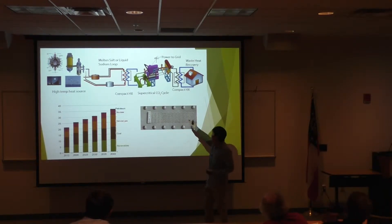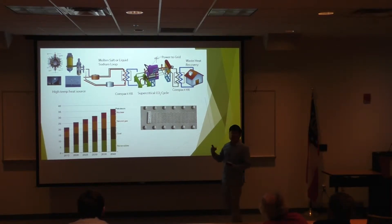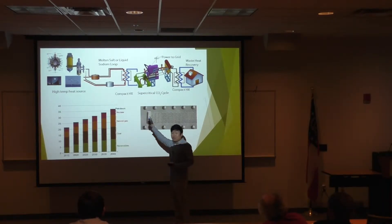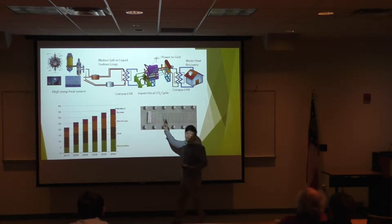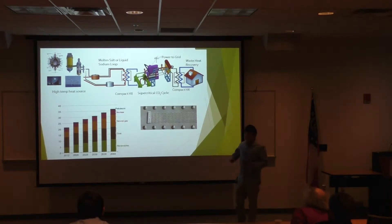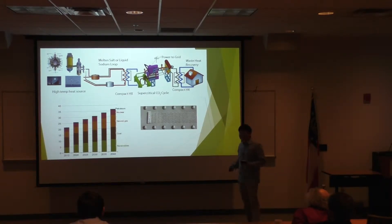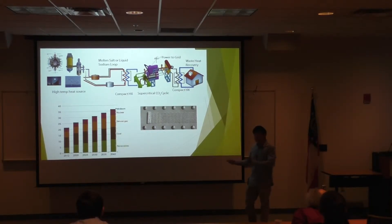We focus on the supercritical CO2 cycle. We heat the CO2, and using that CO2 to run the turbine, and we get electricity. It's transferring heat to electricity, and that's why we use a heat exchanger. There can be many ways to improve cycle efficiency, but this time we want to focus on improving the heat exchanger to improve the cycle efficiency.